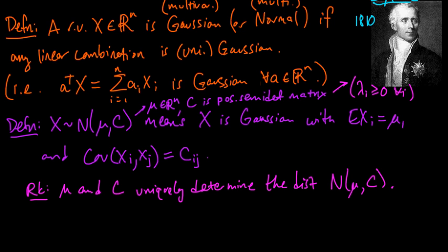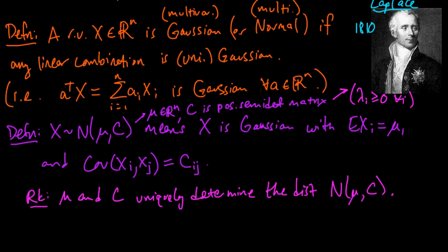Welcome back. We're talking about the multivariable Gaussian, multivariate Gaussian. And one thing I should have mentioned here in the definition is that this univariate Gaussian could be, we allow it to be degenerate. So this is possibly degenerate. And that's okay.